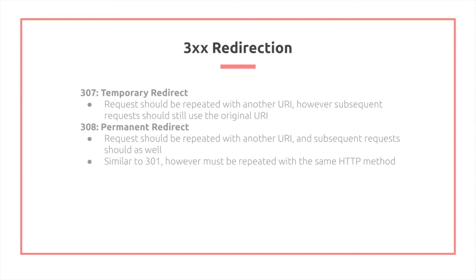In contrast, 308 — permanent redirect — means the request should be repeated with another URI, and subsequent requests should as well. This is similar to 301, moved permanently. However, it is assumed that the client uses the same HTTP method for the request.